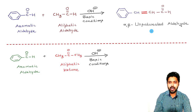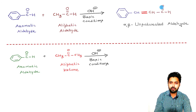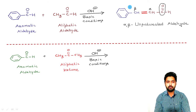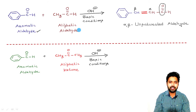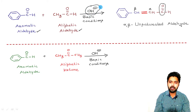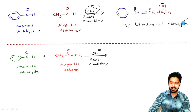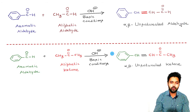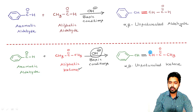Why are we calling it an alpha-beta unsaturated aldehyde molecule? Because starting from this carbonyl group here, you will see that this is the alpha position and this one here is the beta position, and in between the alpha and the beta position there is present a double bond, or let us say unsaturation. So in the first reaction, starting from some aromatic aldehyde and adding an aliphatic aldehyde under basic conditions, we will get a molecule of alpha-beta unsaturated aldehyde.